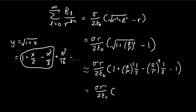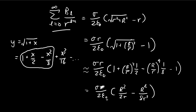Putting r back inside the expression, we get r²/(2r) minus r⁴/(8r³). Now we can compare these terms with our potential expansion to identify the coefficients B₀, B₁, and B₂.